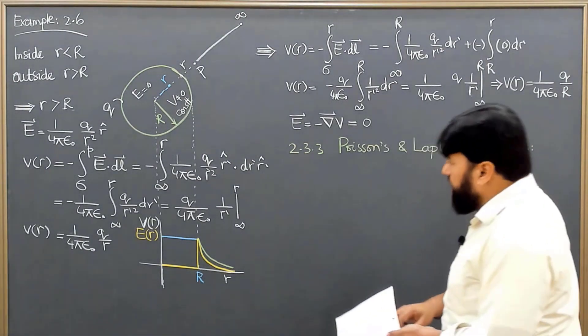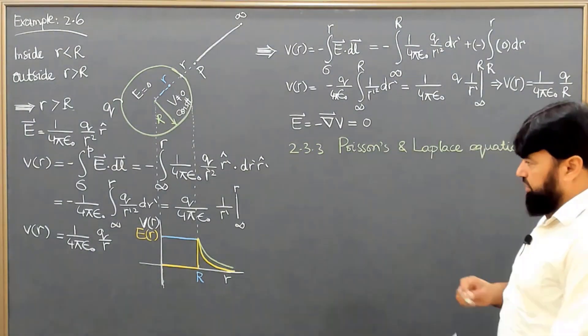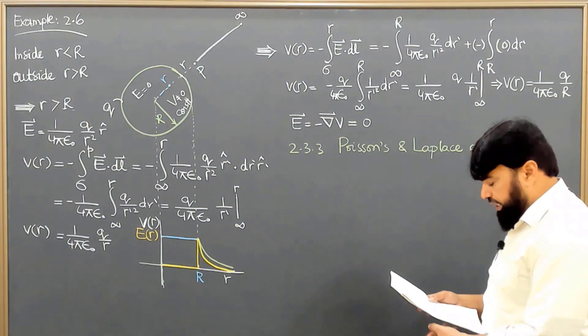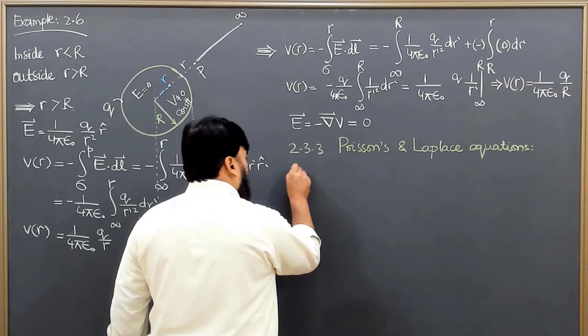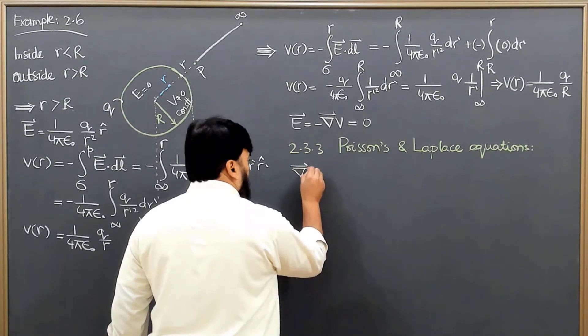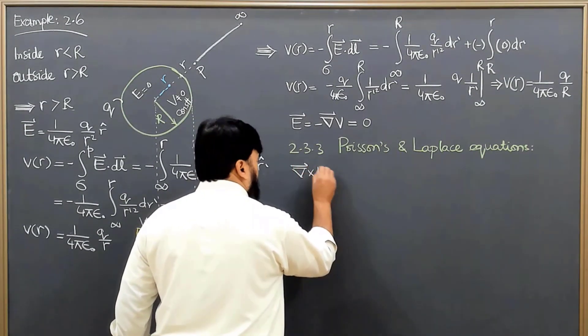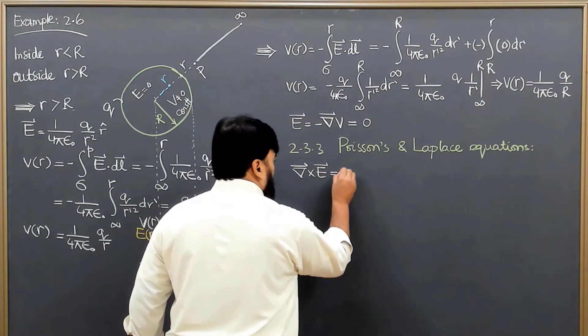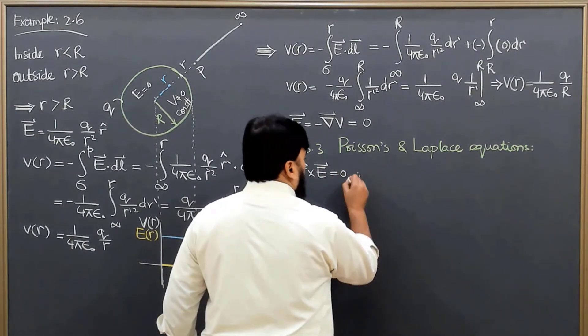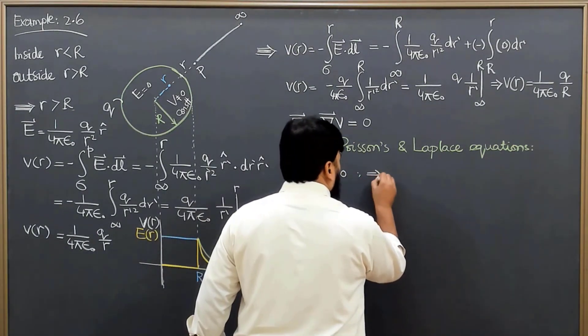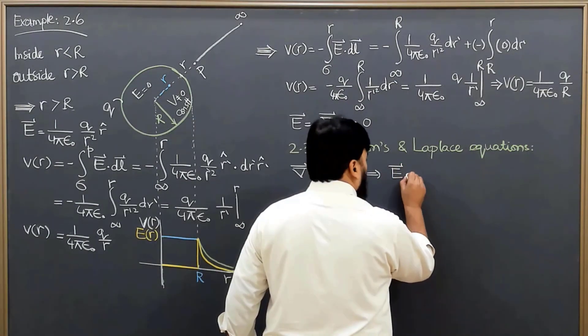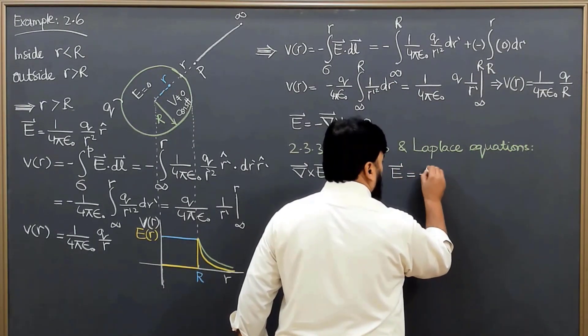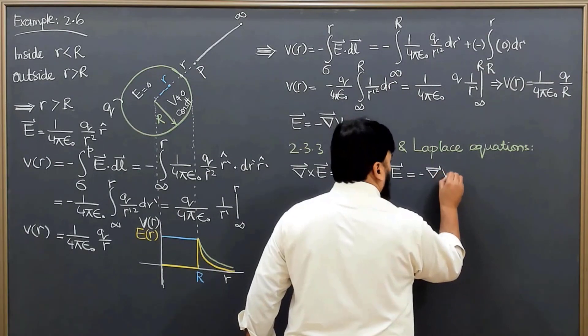We know from this lecture that the curl of the electric field is equal to 0, and this leads us to the definition that electric field is the negative gradient of potential.